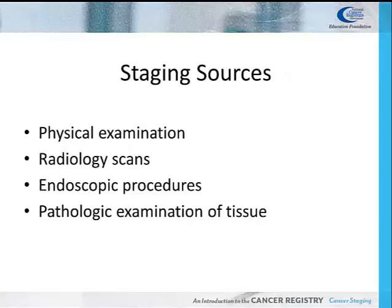Many sources within the medical record are used to determine the extent of a person's cancer. Physical exam of the patient, radiological imaging such as CTs, mammograms, ultrasounds, MRIs, and PET scans. Endoscopic procedures such as colonoscopy, bronchoscopy, cystoscopy, and esophagoscopy.